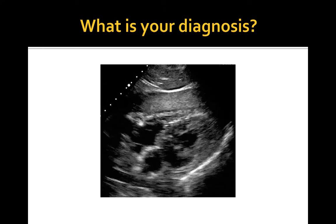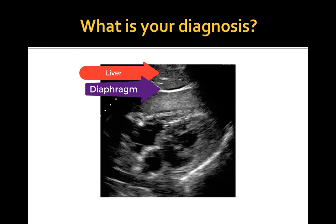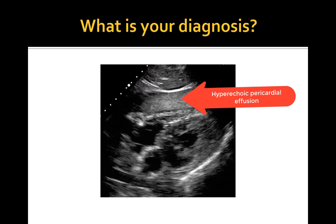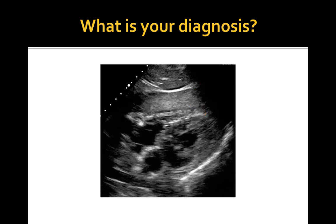This is a subxiphoid view. The top of the screen represents a portion of the liver, separated by a thick hyperechoic bright line which is the summation of the diaphragm and pericardial sac. There is a thick layer of hyperechoic pericardial effusion. This patient has a hemopericardium — the pericardial space is occupied by clotted blood. The most common cause of true acute hemopericardium in veterinary medicine is left atrial rupture in patients with severe mitral valve disease. Other causes include trauma, neoplasia, and anticoagulant toxicity; however, blood in the pericardium does not clot in cases of anticoagulant toxicity.